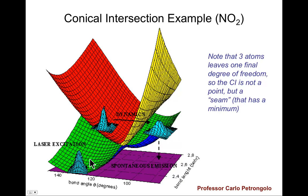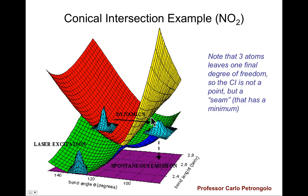And at a certain point, the ground state energy, which goes up with angle bending, compared to the excited state energy, which goes down with angle bending — they cross. And the crossing is not simply a point, but it's a seam, so we can find a line where these two surfaces intersect one another.